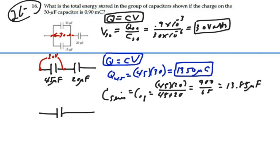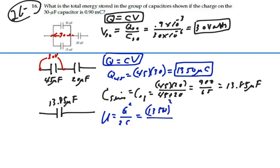We have an equivalent circuit of 13.85 microfarads with a charge of 1350 microcoulombs, because capacitors in series have the same charge as their equivalent capacitance. The energy stored equals charge squared over 2 times the capacitance: 1350 microcoulombs squared over 2 times 13.85 microfarads. That gives us 65,794 microjoules, because we have micro squared over micro and one of the micros cancels out.